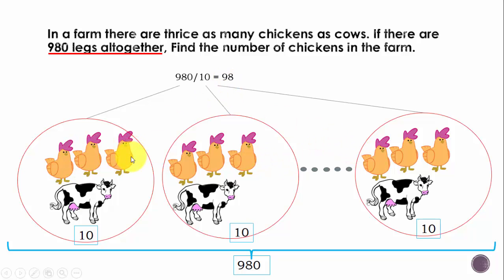There are 98 groups and in each group there are 3 chickens. So how many chickens do you think there are in the farm? You are right: chickens is 98 number of groups times 3, 3 chickens in each group. That gives you 294 chickens.